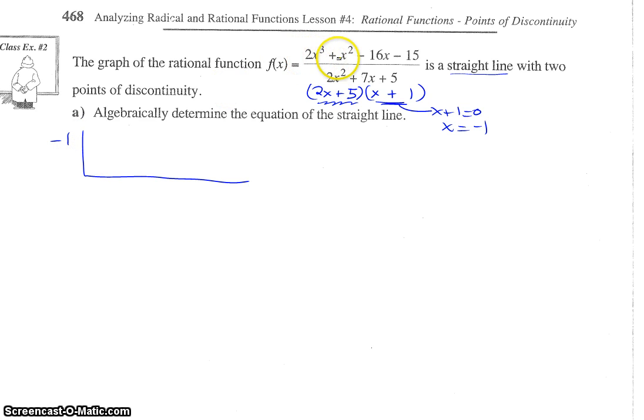Our coefficients in descending order, 2, 1, there's a 1 in front of that, negative 16, and negative 15. Okay, now, let's do synthetic division. And actually, if you want to do this yourself, just pause the video, and then, when you're finished, resume.